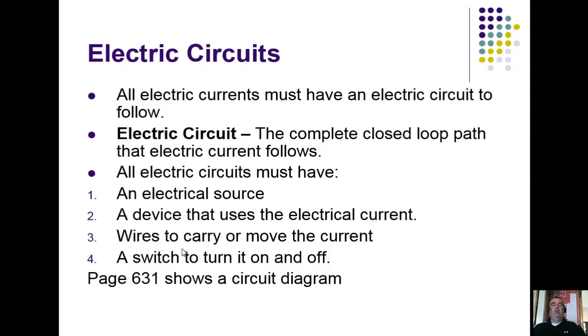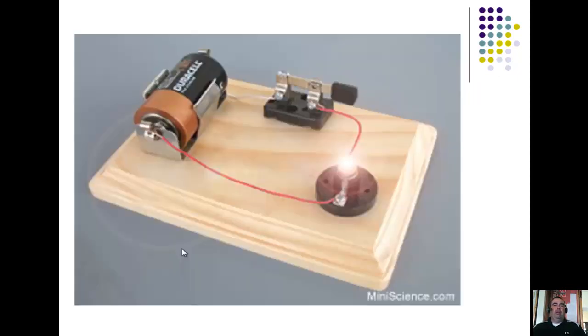Page 631 shows you a circuit diagram. On the following slide, I'm going to show you a circuit diagram—a little bit different, but pretty much the same thing. You have a battery here. Here's my positive end. Charges leave that positive end flowing through that wire, getting over to this light bulb, but nothing done yet.